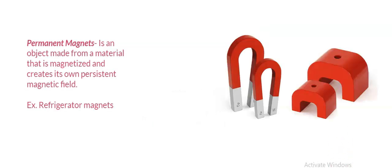Now a permanent magnet is an object that is made from a material that is magnetized and creates its own persisting magnetic field. One example is refrigerator magnets that you put to hold up notes, paper, letters on your refrigerator.